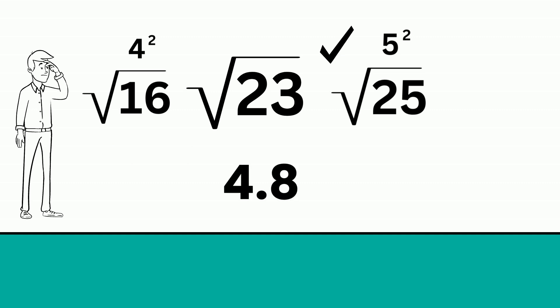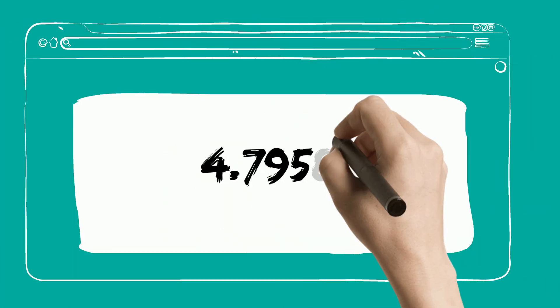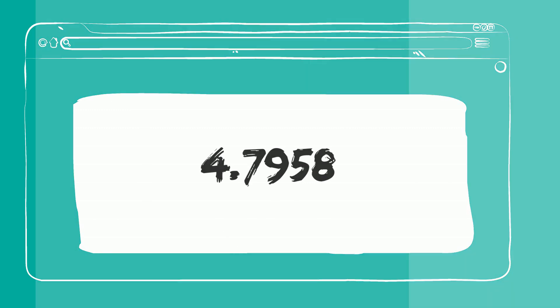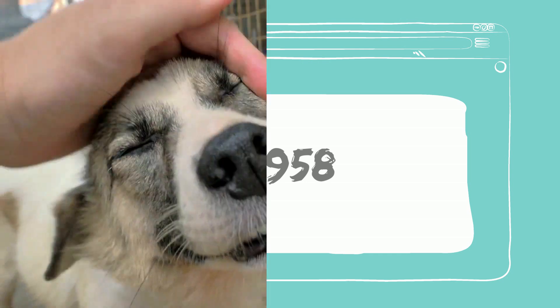There we go. I hope that helps — and remember, the square root of 23: you could probably use four and seven thousand nine hundred and fifty-eight ten-thousandths. Thanks for watching.